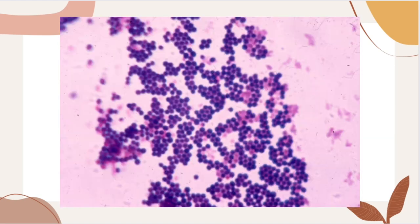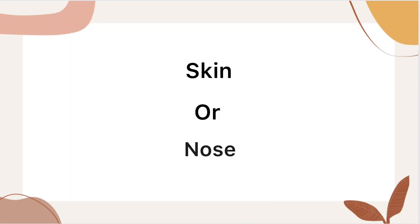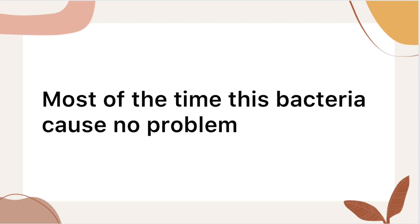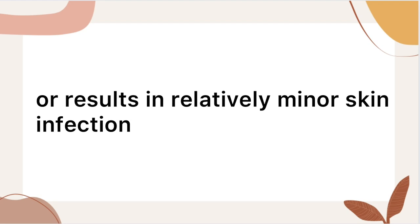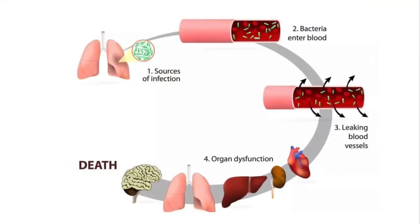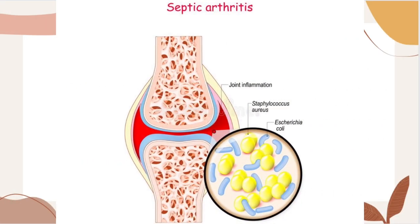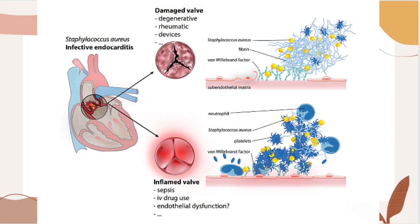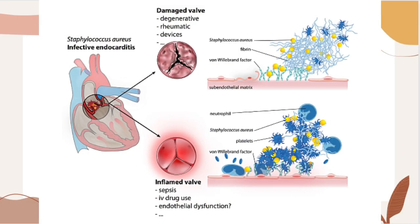Staph infections are caused by Staphylococcus bacteria, which are types of germs commonly found on the skin or in the nose of even healthy individuals. Most of the time, these bacteria cause no problems or result in relatively minor skin infections. But staph infections can turn deadly if the bacteria invade deeper into your body, entering your bloodstream, joints, bones, lungs, or heart. A growing number of otherwise healthy people are developing life-threatening staph infections.